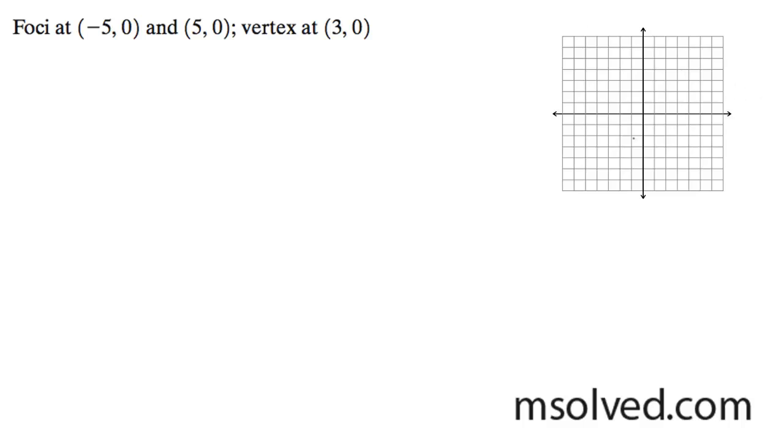Starting off, the foci is at (-5, 0) and (5, 0), which means it's going to be 5 over here. And then the vertex is at (3, 0) and (-3, 0).